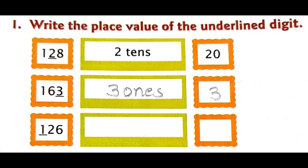Here, we have the number 128. Which digit is underlined? It is 2. 2 is in which place? It is in tens place. So we get 2 tens. 2 tens is equal to 20. 2 tens is written in the green box, and 20 is written in the orange box.